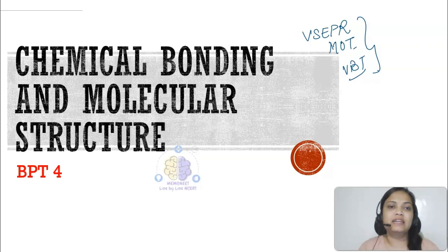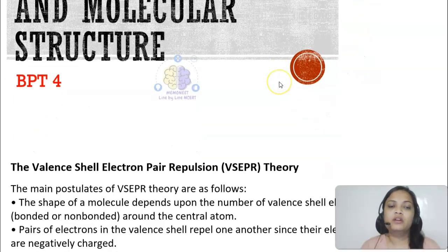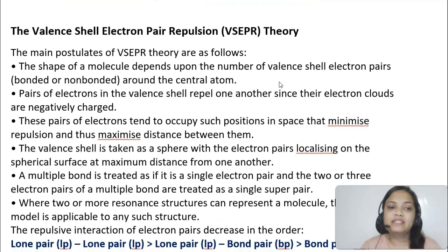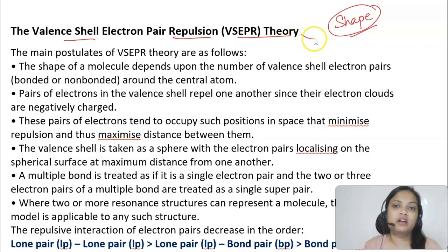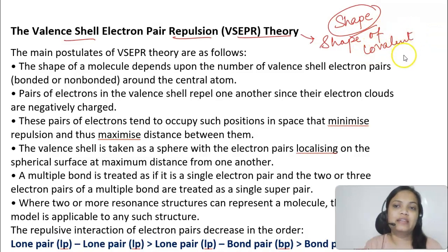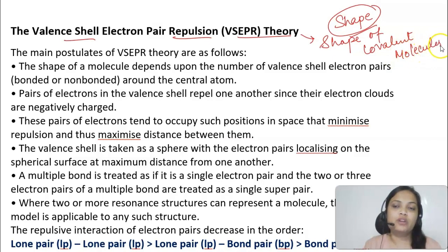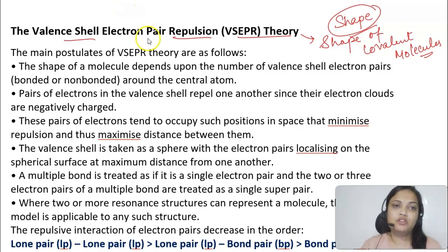Today we will be learning about the different theories: the Valence Shell Electron Pair Repulsion theory, the Molecular Orbital theory, and the Valence Bond theory. Let us start with the Valence Shell Electron Pair Repulsion theory. The Lewis concept is unable to tell us about the shape of molecules, so this VSEPR theory gives us a quick idea about the shape of covalent molecules and how we can predict their shapes.